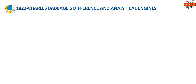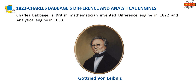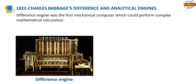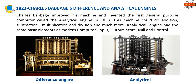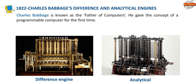1822 — Charles Babbage's Difference and Analytical Engines: Charles Babbage, a British mathematician, invented the Difference Engine in 1822 and the Analytical Engine in 1833. The Difference Engine was the first mechanical computer which could perform complex mathematical calculations. He then invented the first general-purpose computer called the Analytical Engine in 1833, which could do addition, subtraction, multiplication, division, and much more. The Analytical Engine had the same basic elements as a modern computer: input, output, store, mill and control. Charles Babbage is known as the father of computers. He gave the concept of a programmable computer for the first time.